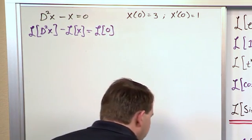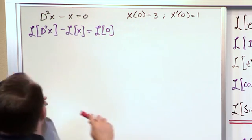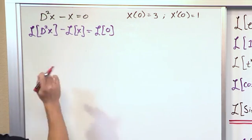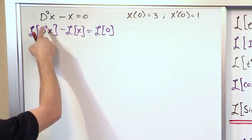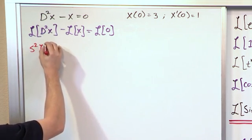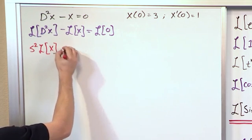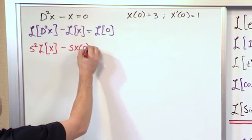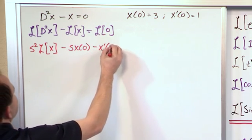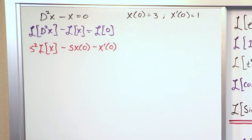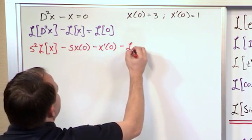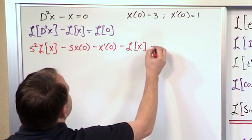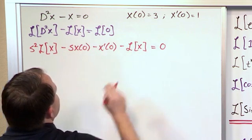All right, so what we're going to do, this is a second derivative, so the way it works, and you can go back and refer, is s² times the Laplace Transform of x, and then you have minus s·x(0) minus x'(0). This follows the pattern exactly what we've written down previously. Minus Laplace of x is equal to, you take the Laplace of 0 and you just get 0.